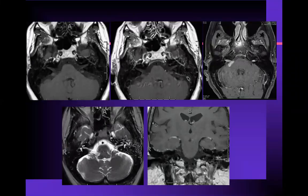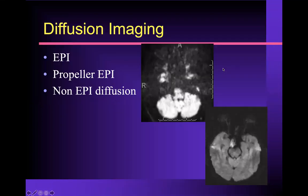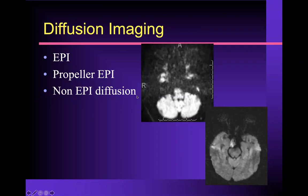Here's a protocol showing pre-contrast T1 weighted image, post-contrast T1 weighted without fat saturation, post-contrast with fat saturation, a T2 weighted image, and a post-contrast coronal. You should always do your pre-contrast T1 weighted images without fat suppression, and your post-contrast images should be done with fat suppression. For diffusion sequences, there are different options — EPI, propeller EPI, or non-EPI diffusion. Non-EPI diffusion, called HASTE diffusion imaging on a Siemens system, probably has the highest sensitivity and specificity for finding small lesions like cholesteatoma, so if you have that capability, you should use it.